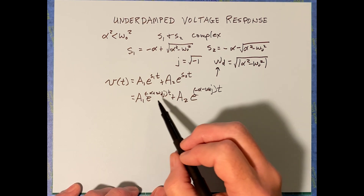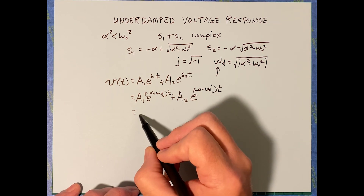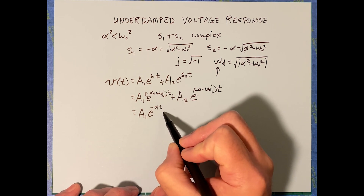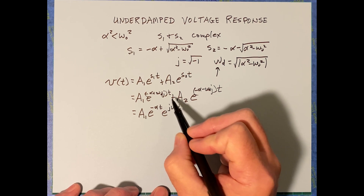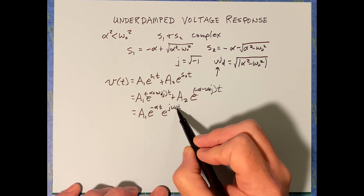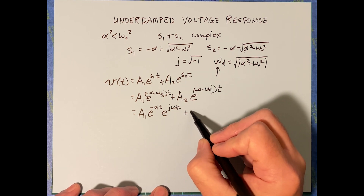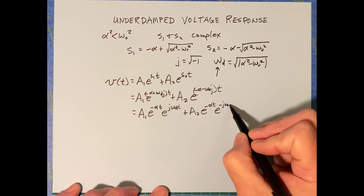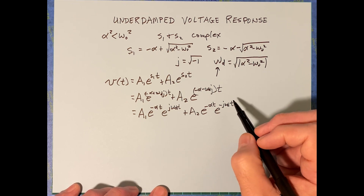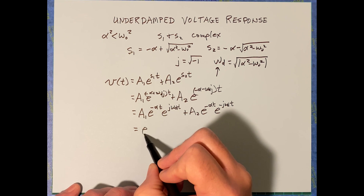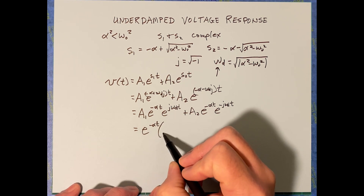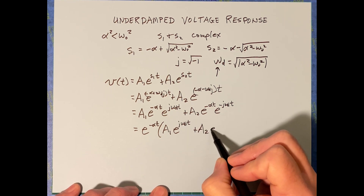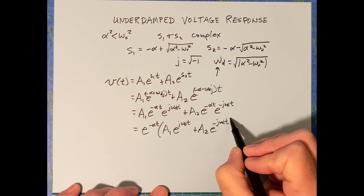I'm going to simplify this a little bit. You can separate these exponentials: A1·e^(-alpha·t)·e^(j·omegaD·t) plus A2·e^(-alpha·t)·e^(-j·omegaD·t). All I did is change the order and factor out e^(-alpha·t), then group A1·e^(j·omegaD·t) plus A2·e^(-j·omegaD·t).